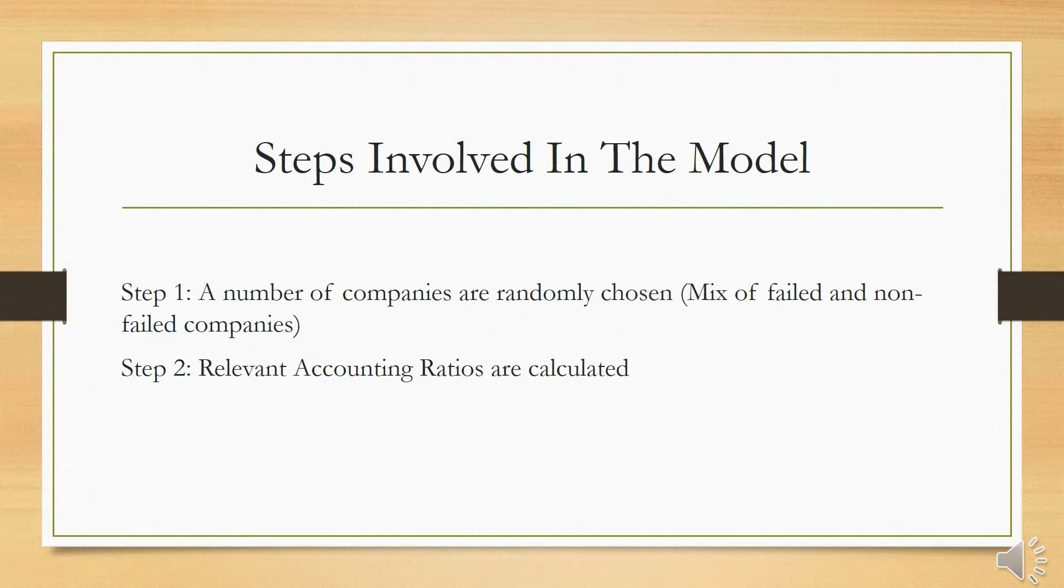In the first step, a number of companies are randomly chosen, and while choosing these companies we make sure that we have a mix of both types of companies - failed and non-failed, or we can say that we have a mix of distressed and non-distressed companies.